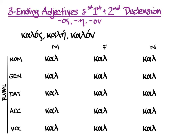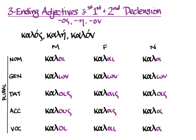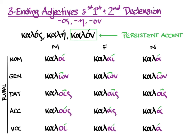Now let's look at the plural. Here are the stems, and here are all of the endings, taking it across the cases. The nominative plural gives us kaloi, kalai, kala. The genitive plural gives us kalon, kalon, kalon. The dative plural gives us kalois, kalais, kalois. The accusative plural gives us kalus, kalas, kala. And the vocative plural gives us kaloi, kalai, kala.